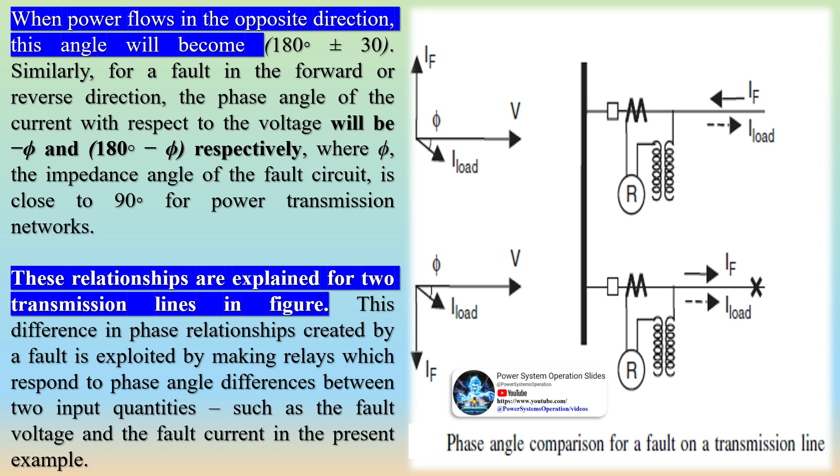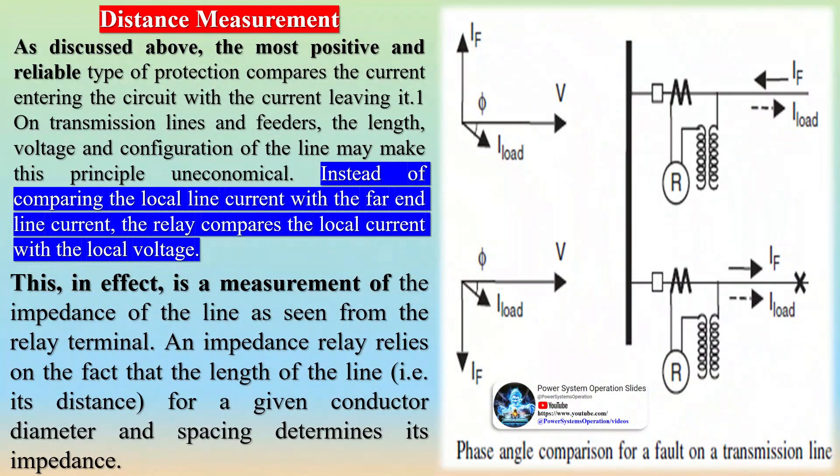When power flows in the opposite direction, this angle will become (180° ± 30°). Similarly, for a fault in the forward or reverse direction, the phase angle of the current with respect to the voltage will be -φ and (180° - φ) respectively, where φ, the impedance angle of the fault circuit, is close to 90° for power transmission networks.